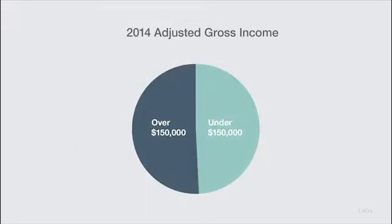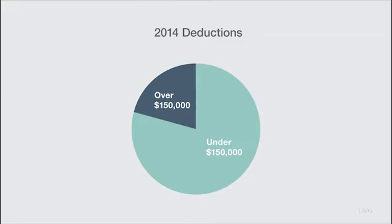Finally, some of the volatility comes from deductions and credits. In 2014, filers over $150,000 had about as much income as filers under $150,000, but the filers under $150,000 got nearly 80 percent of the deductions. This shrunk the stable piece of the tax base much more than it shrunk the volatile piece.